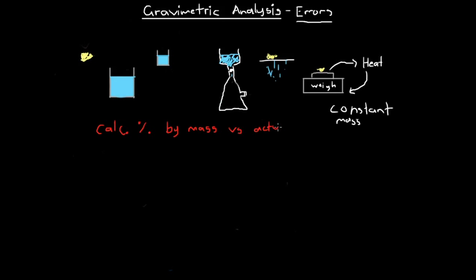The calculated percentage by mass is obtained from experiments and so it will be affected by any errors we make. The actual percentage by mass is the true value that we're striving for. When analysing the effect of an error on this process, we want to see if it makes our calculated percentage by mass higher or lower than the actual percentage by mass.